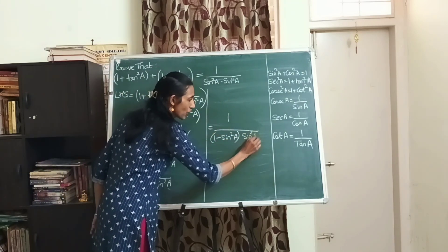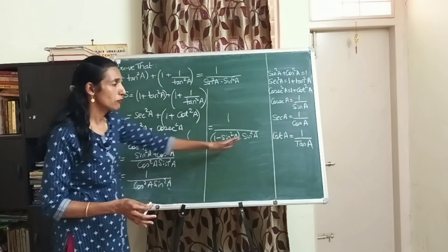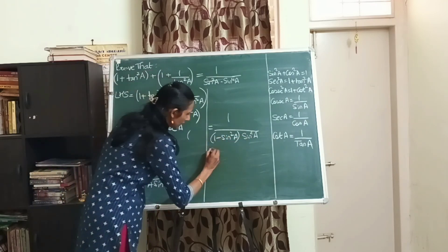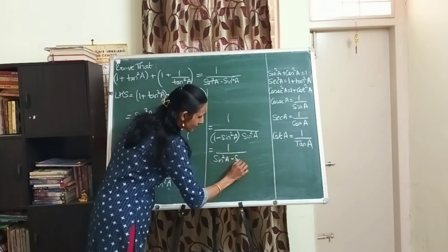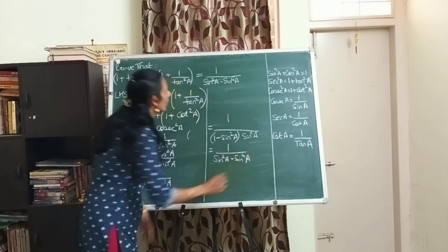Let me just open up the brackets. Here I'll get sin square a minus sin raised to 4a. Did you see? We have got the right hand side. Very easily we have been able to prove this.